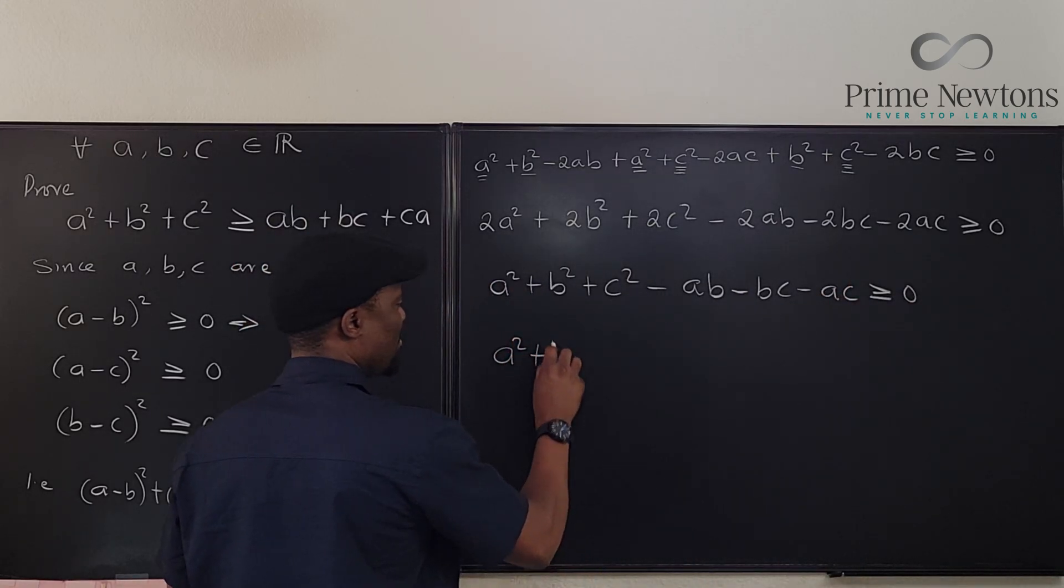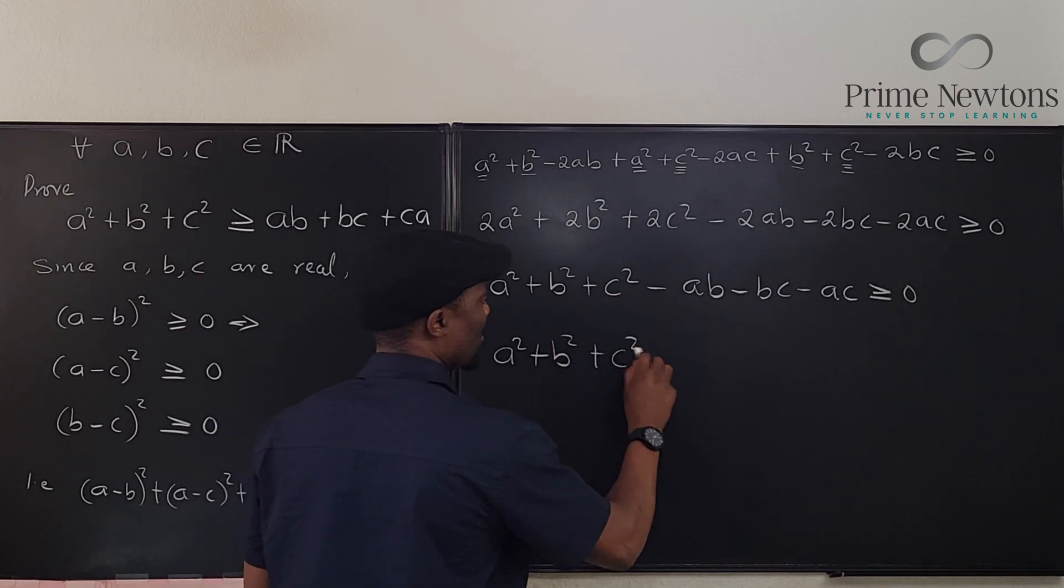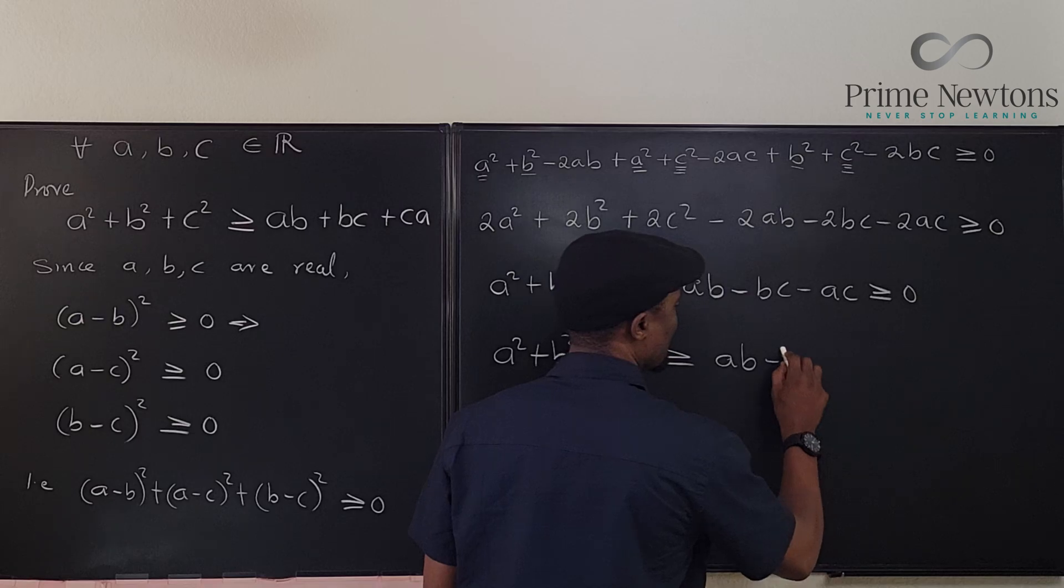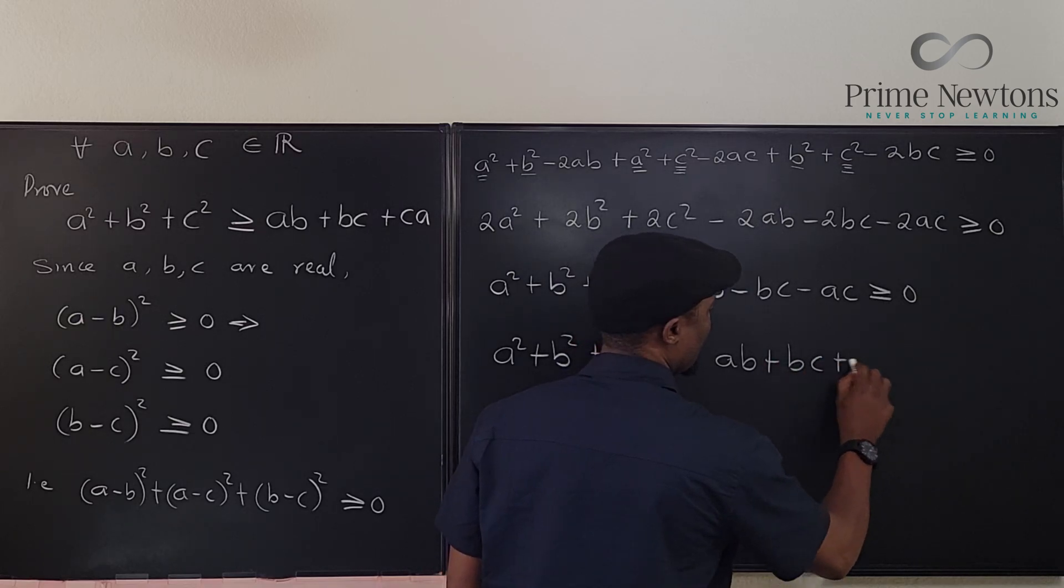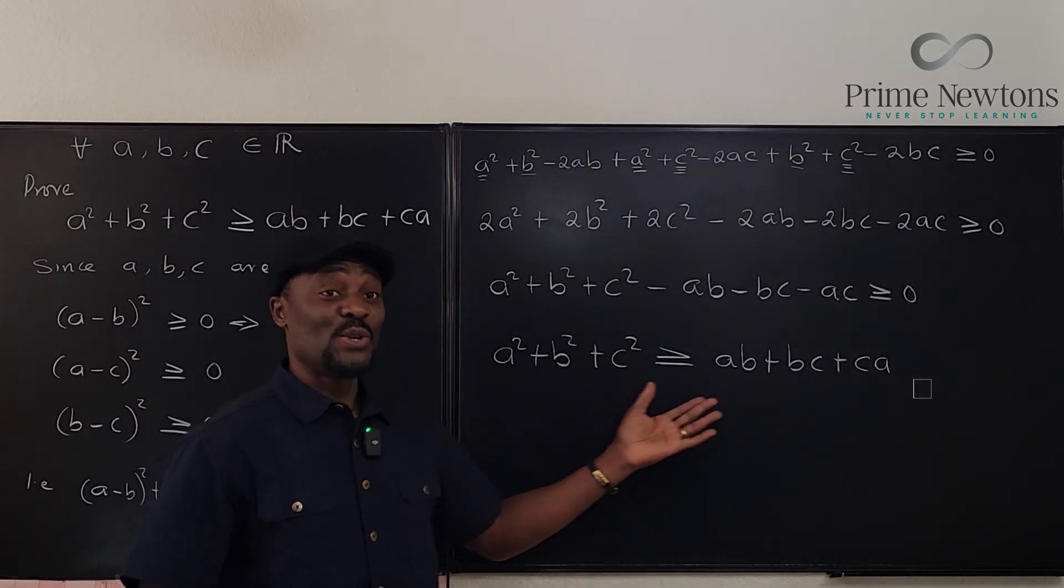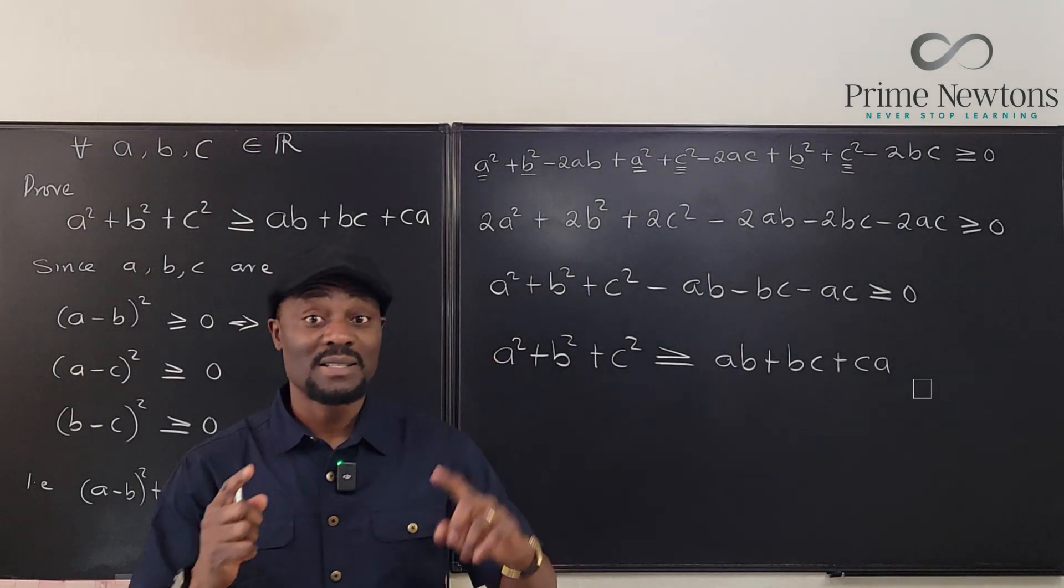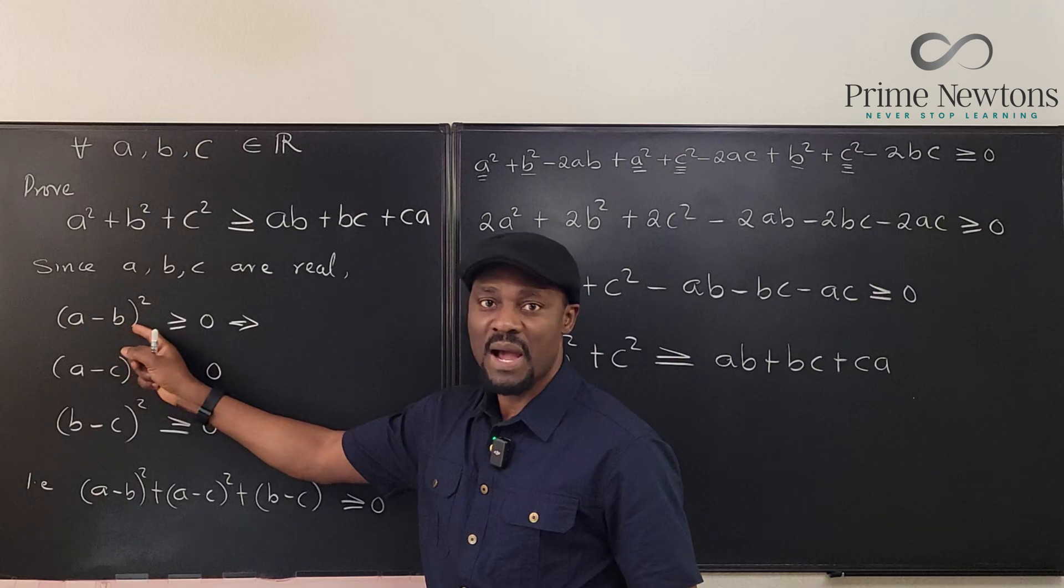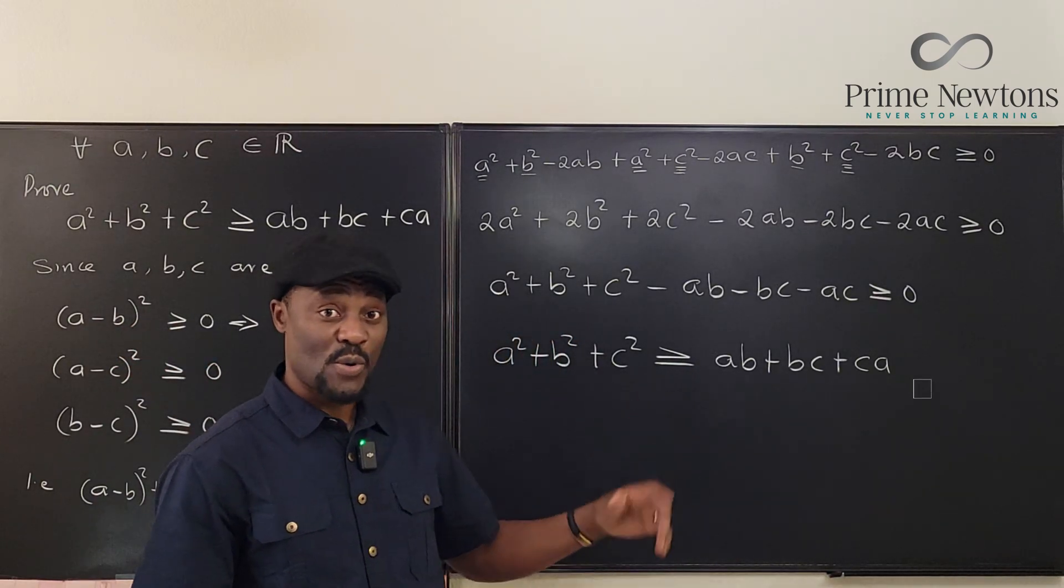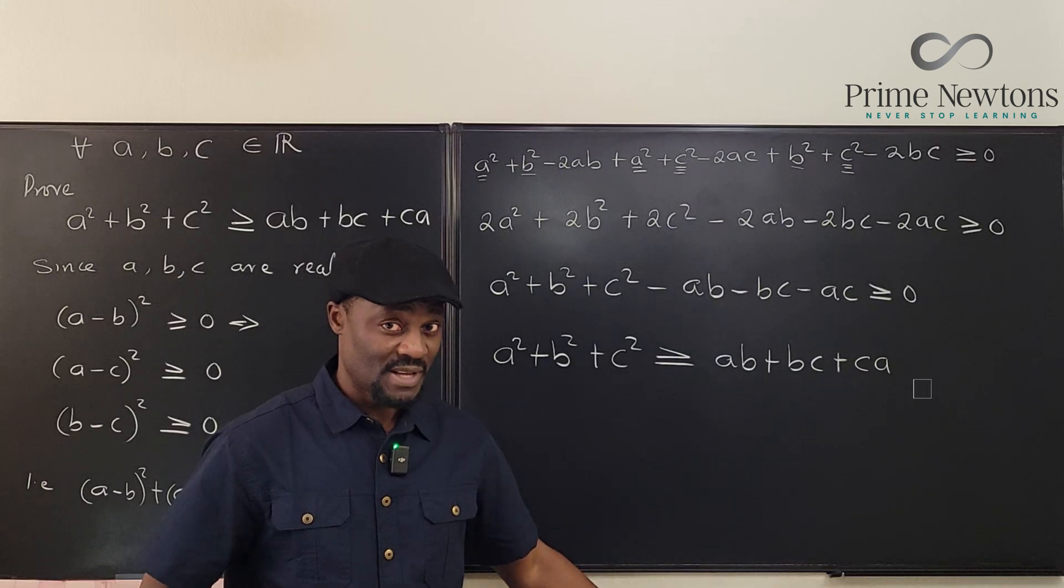So we have A squared plus B squared plus C squared is greater than or equal to AB plus BC plus AC or CA, however you want to write it. Now, this looks so easy. It was because I made the right choice of A minus B squared. Now, if you have another way to reach this answer quickly, leave it in the comment section.